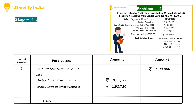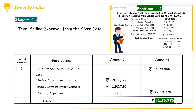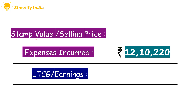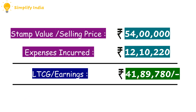We take the selling expenses from the given data, but as the problem does not mention any selling expenses, we take it as nil. Now we add the index cost of acquisition and the index cost of improvement to get a total of Rs. 12,10,220. When we deduct this from the sales proceeds of Rs. 54,00,000, we get a long-term capital gain of Rs. 41,89,780.